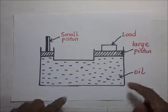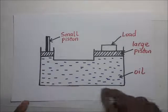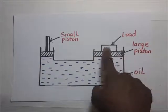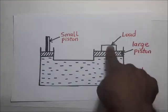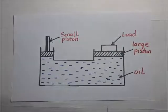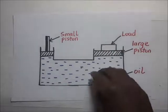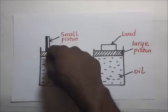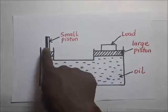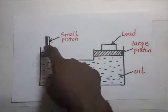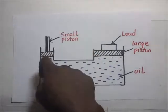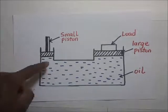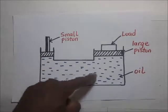We have an enclosed container with a small piston and a large piston. The large piston has a load on top of it. To make it move up, we simply push the small piston downwards. When we push the small piston downwards, we are exerting a certain pressure, and this pressure is going to travel throughout the liquid.